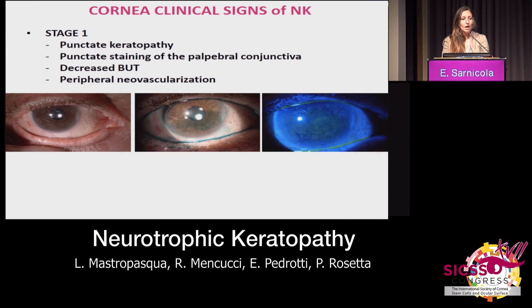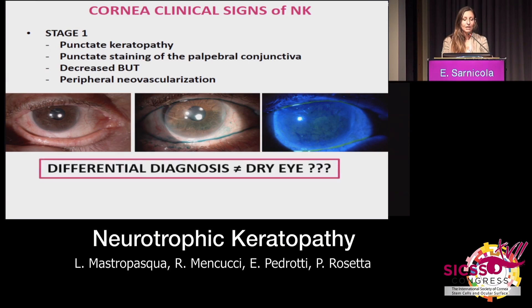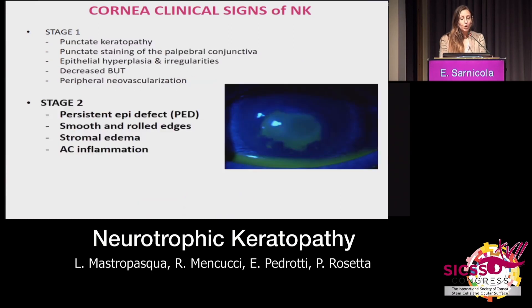In the literature, three stages are described. Stage one: punctate keratopathy, punctate staining of the palpebral conjunctiva, decreased BUT — the break-up time of the tear film — and sometimes even peripheral neovessels. These are all specific signs that we also see in dry eye. So, how to go about differential diagnosis? The first thing to be done in all first visits is to check the corneal sensation.